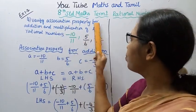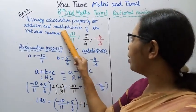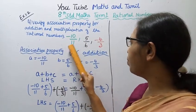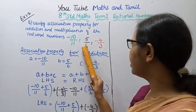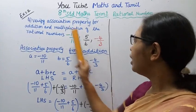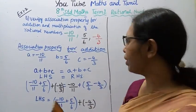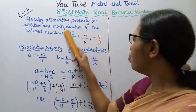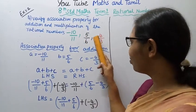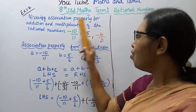Verify associative property for addition and multiplication of the rational numbers. The three given numbers are: minus 10 by 11, 5 by 6, and minus 4 by 3. Whenever we verify associative property, 3 numbers are given.